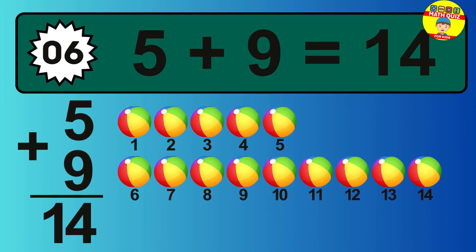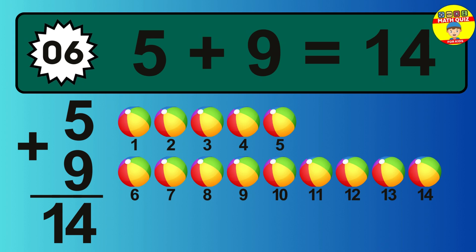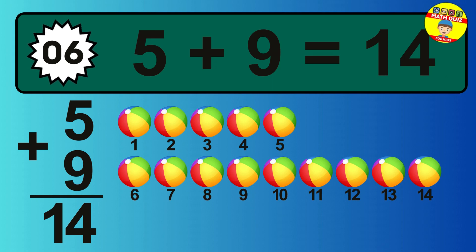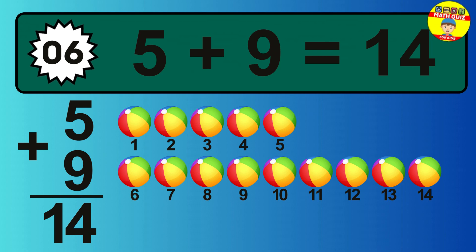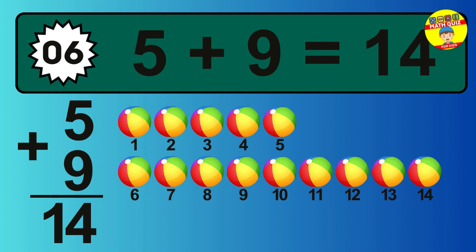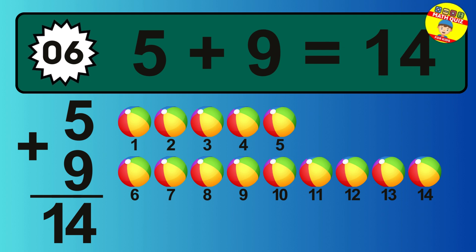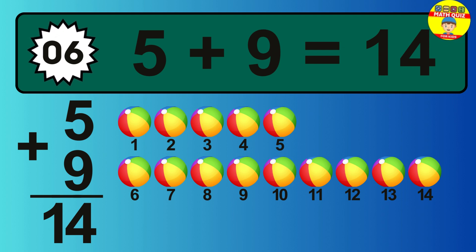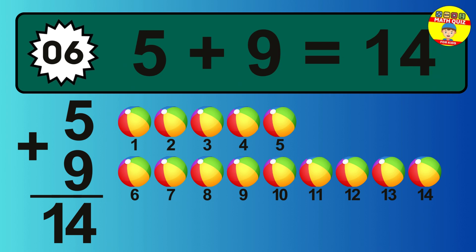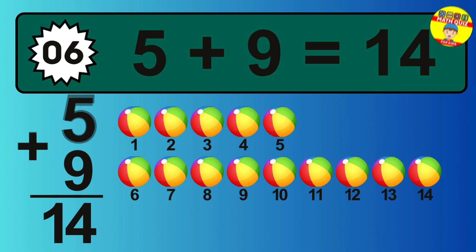So the answer is 5 plus 9 is 14. Let's count it: 1, 2, 3, 4, 5, 6, 7, 8, 9, 10, 11, 12, 13, 14.